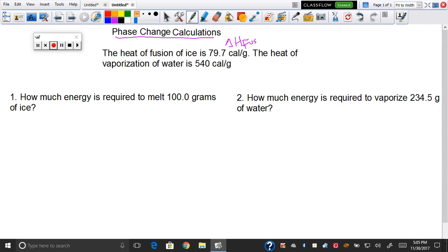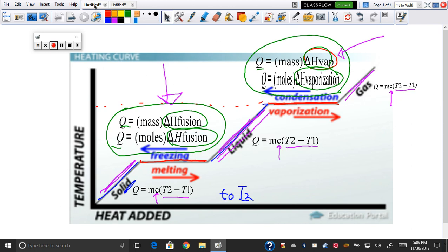The heat of vaporization of water is 540 calories per gram, so this is delta H of vaporization. Problem number one: how much energy is required to melt 100 grams of ice? Well, let's see which equation do I use?